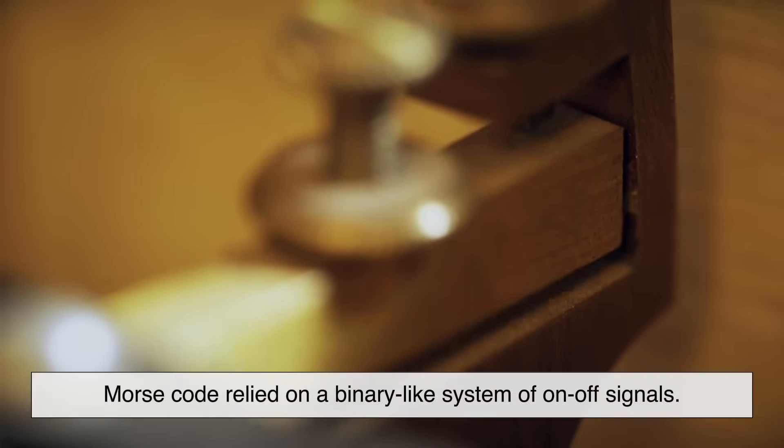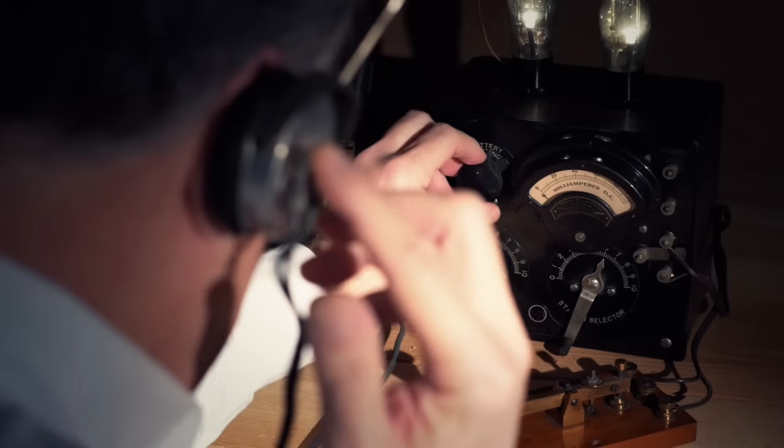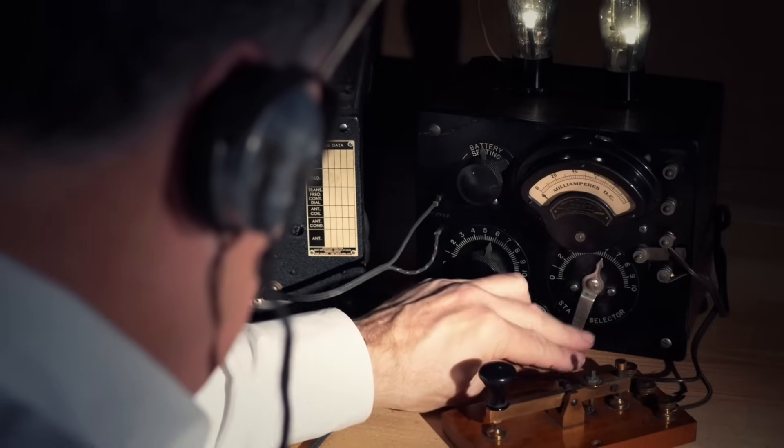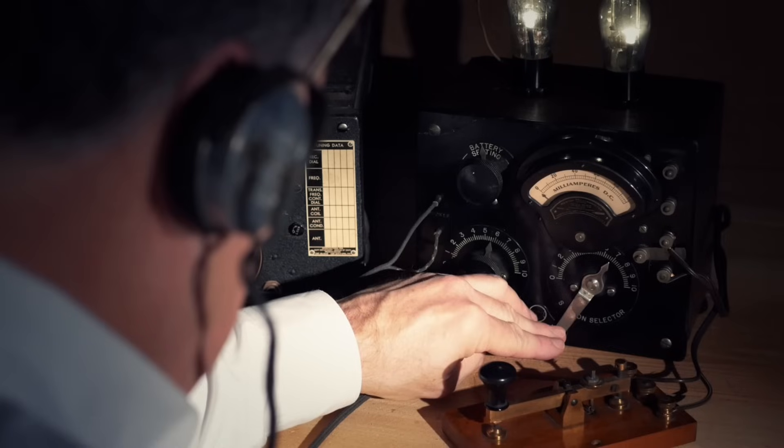Morse code relied on a binary-like system of on-off signals. This made it resistant to noise and interference, allowing clear messages to be transmitted even under challenging conditions.